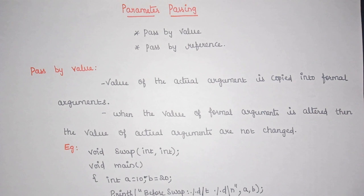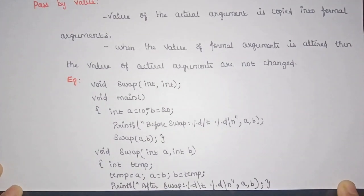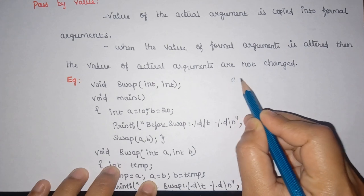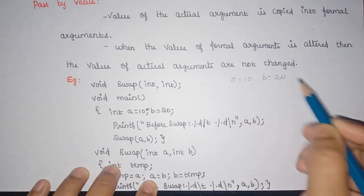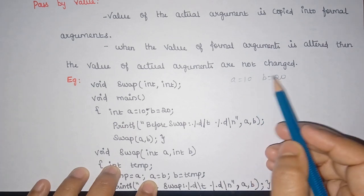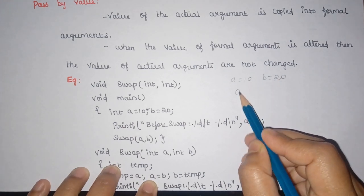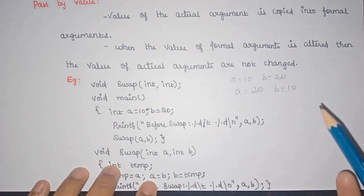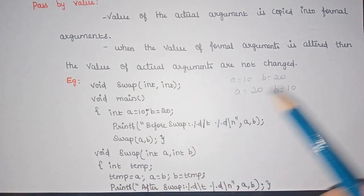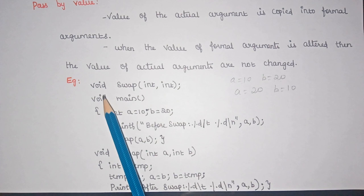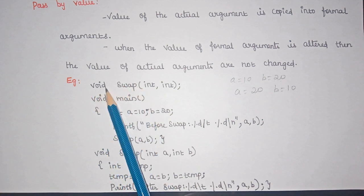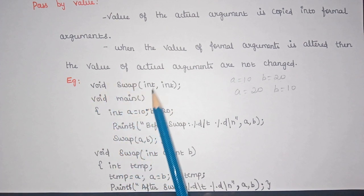I'll explain with an example. This is a C program for swapping of two numbers. Swapping means interchanging two numbers — if a is 10 and b is 20, after swapping a will get the value 20 and b will get the value 10. This program is written for swapping two values and the function used is swap, which is of void type, meaning it won't return anything.